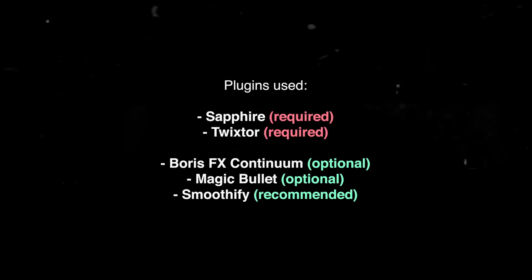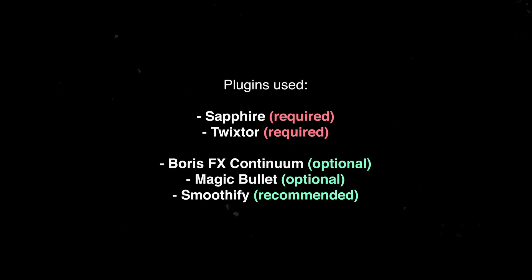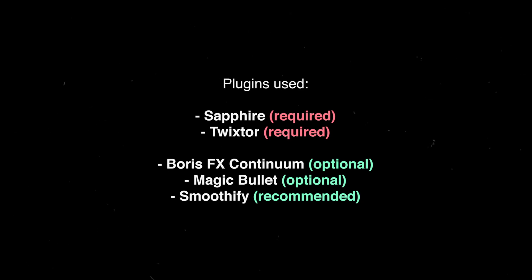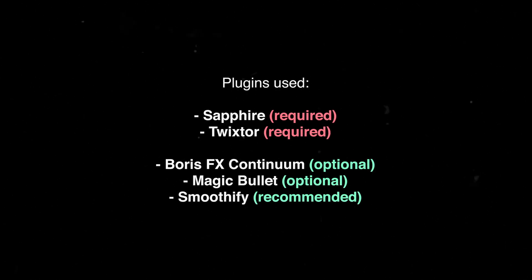The plugins you need are Sapphire for the transitions and effects, Twixter for the time remap, and BCC — also known as Forest Effects Continuum — which is optional. That's only if you plan on using BCC Lens Blur over Sapphire Blur, which in my opinion looks better. Magic Bullet for the color grading, but if you know how to color grade using Lumetri Color, feel free to use that instead. And Smoothify, which is a free extension — you don't need it but I'm going to be making use of it to speed up the keyframing and graphing process.